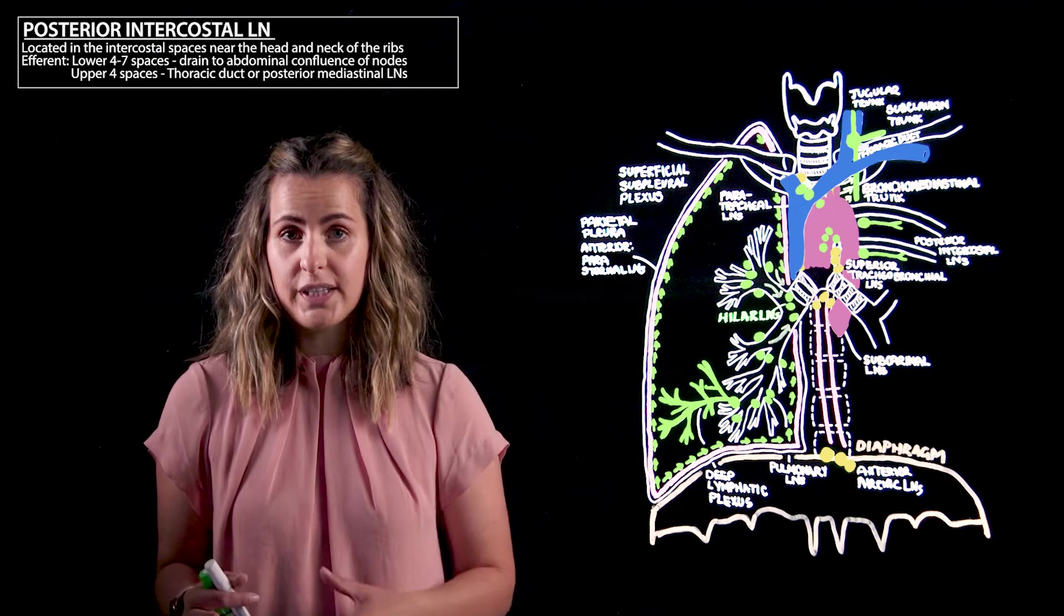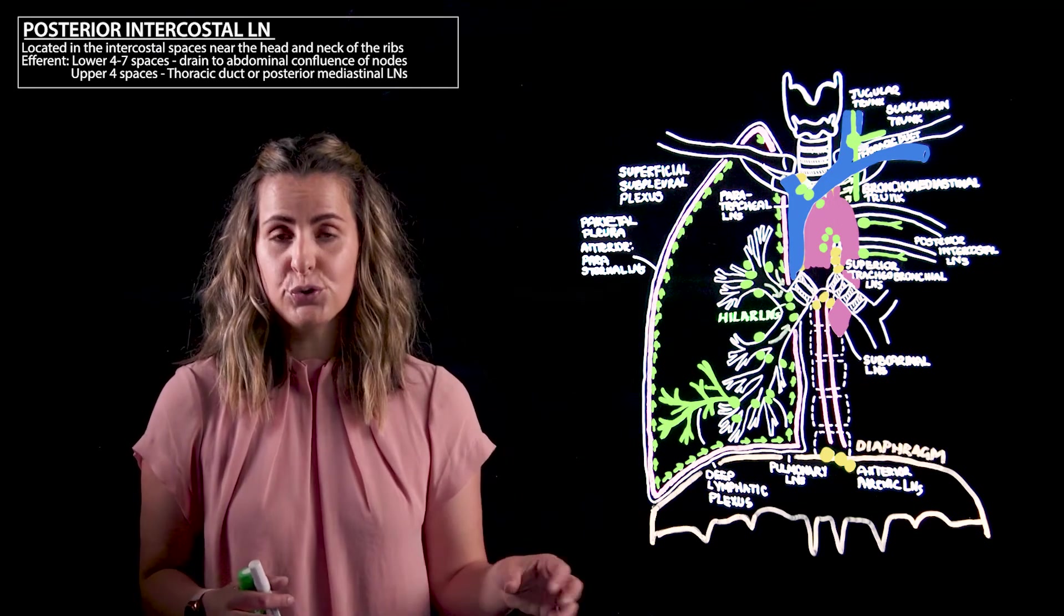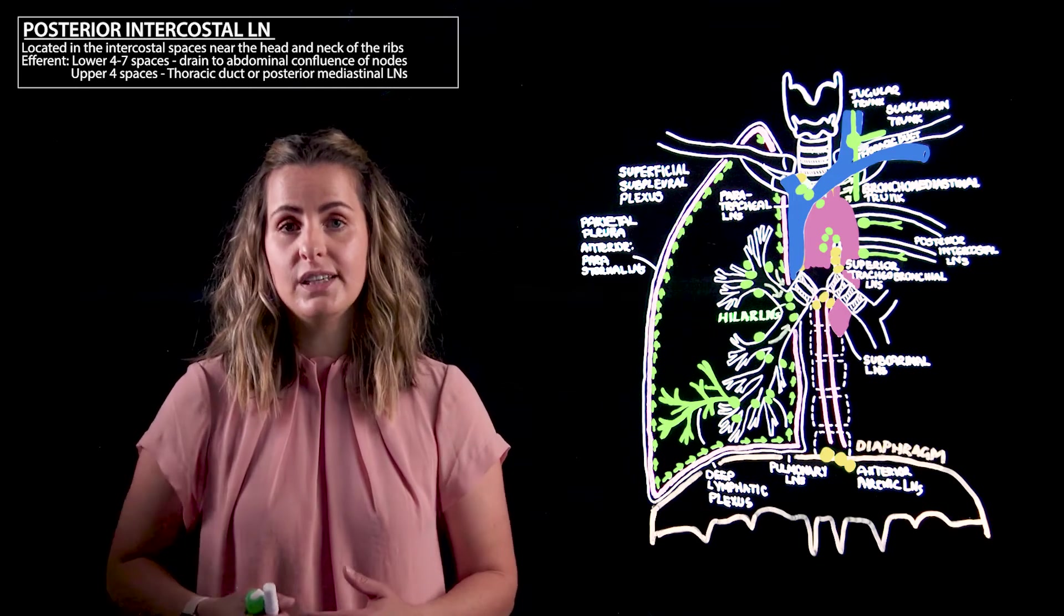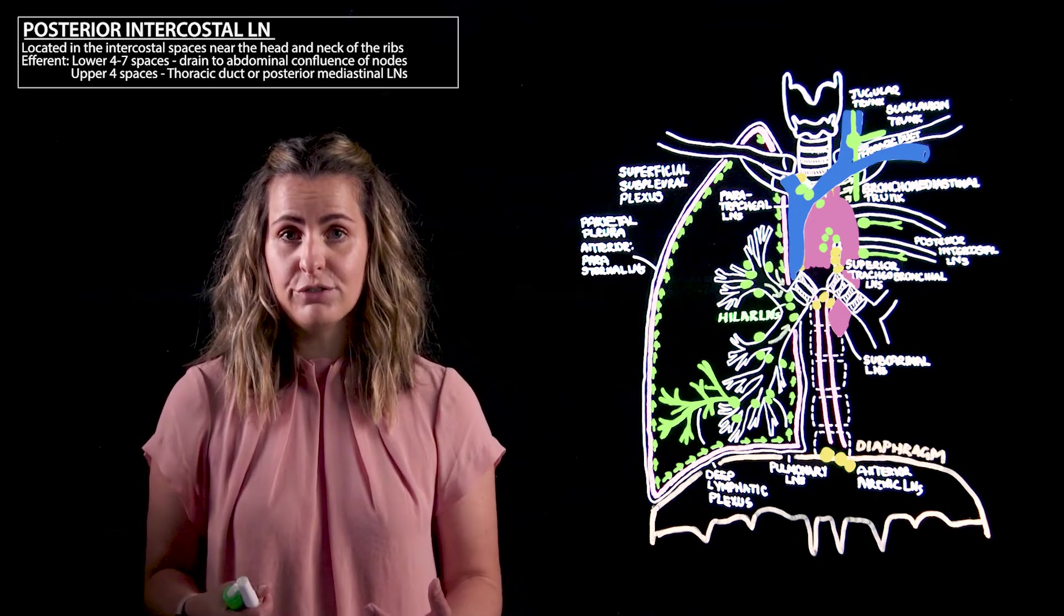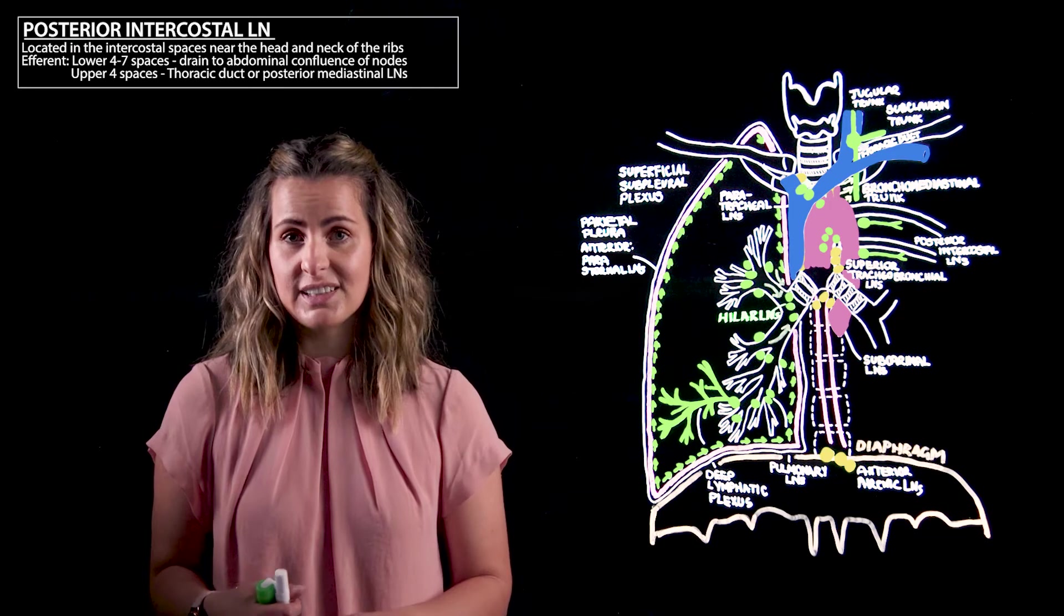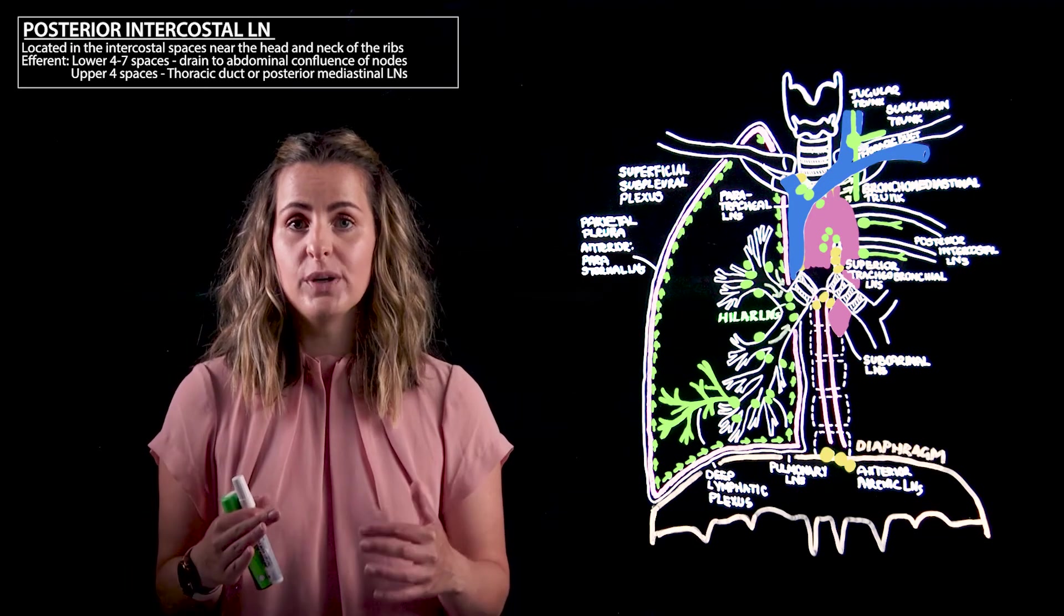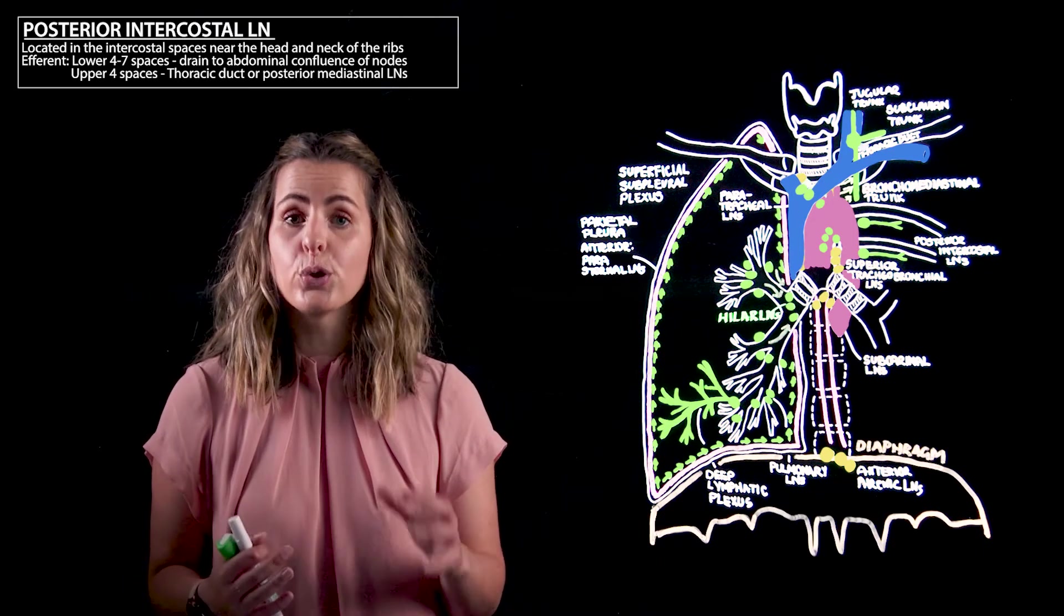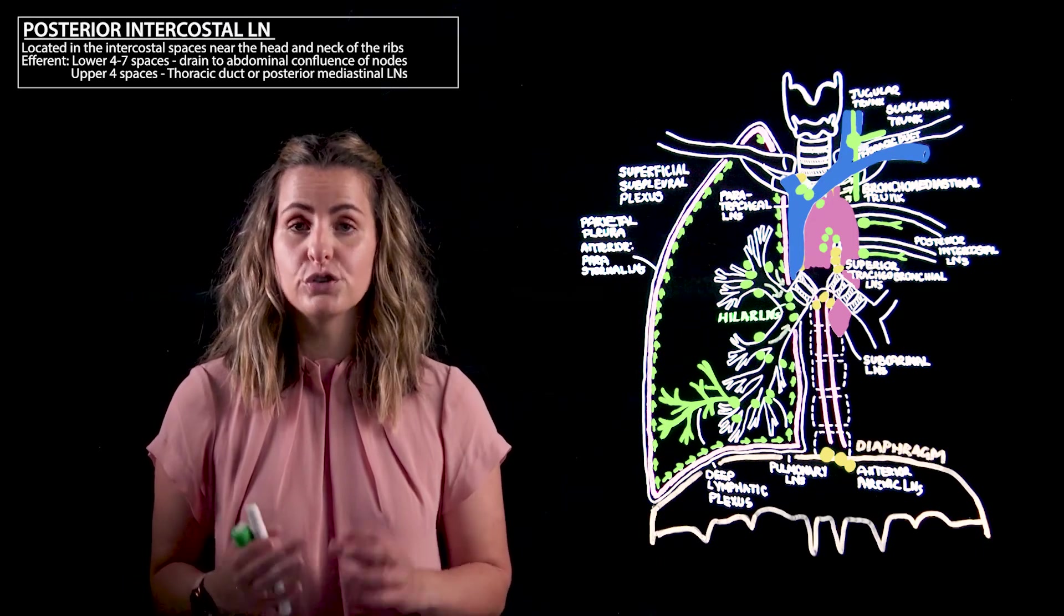The efferent drainage of the posterior intercostal nodes in the lower fourth to seventh spaces will empty into the abdominal confluence of lymph nodes or the start of the thoracic duct. The upper spaces however will drain directly into the thoracic duct on the left hand side or the posterior mediastinal lymph nodes on the right.